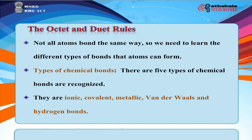There are five types of chemical bonds that are recognized: ionic, covalent, metallic, van der Waals, and hydrogen bonds.